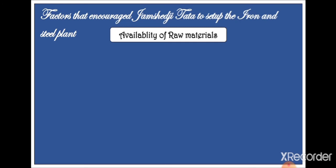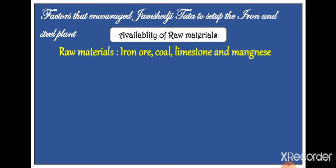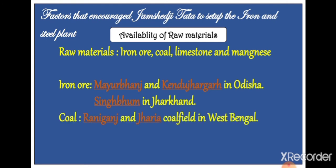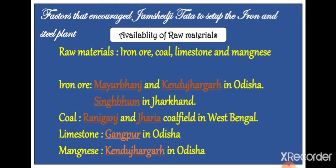Now let us see how these factors play an important role in the development of TISCO. First, availability of raw materials: the raw materials required in manufacturing iron and steel are iron ore, coal, limestone, and manganese. TISCO gets iron ore from Mayurbhanj, Kendujhar, and Singhbhum in Odisha and Jharkhand. Coal comes from Jharia and Raniganj coalfields of West Bengal. Limestone is supplied from Gangapur in Odisha, and manganese also comes from Kendujhar in Odisha.